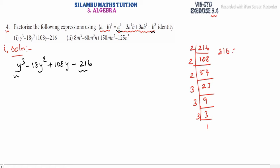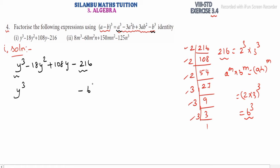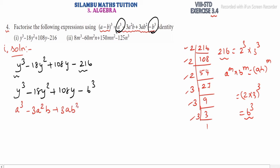So we find that 216 is 6 cube. Now rewriting: y cube minus 6 cube — that's a cube minus b cube. The middle terms are minus 18y squared plus 108y, copied as is. Comparing with the identity a cube minus 3a squared b plus 3ab squared minus b cube, we get a equals y and b equals 6.